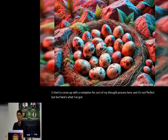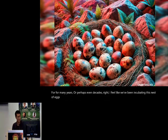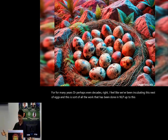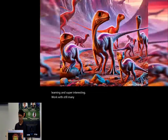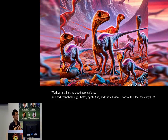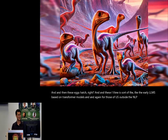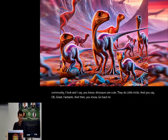For many years or perhaps even decades, I feel like we've been incubating this nest of eggs — all the work done in NLP up to this point, including rule-based systems, word embeddings, neural networks, deep learning, and super interesting work with still many good applications. And then these eggs hatch. For those of us outside the NLP community, I look and see early LLMs based on transformer models — they're cute, they do little tricks, and you say 'OK, fantastic,' and go back to what you were doing.